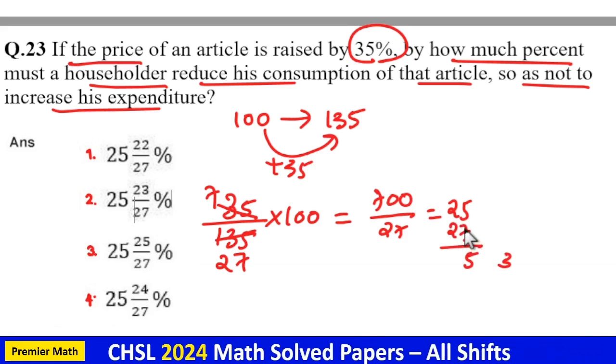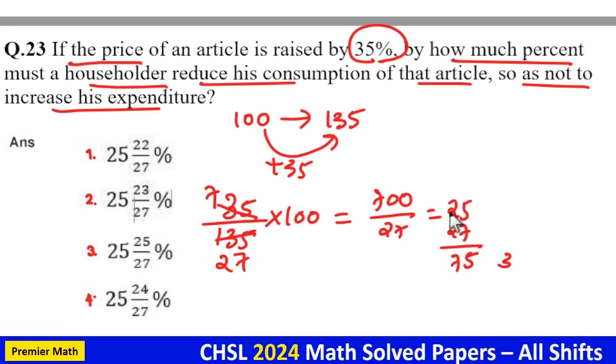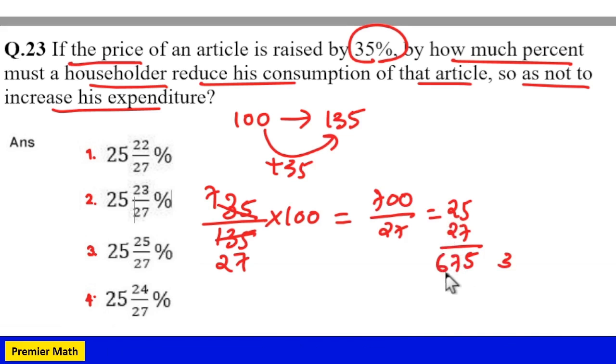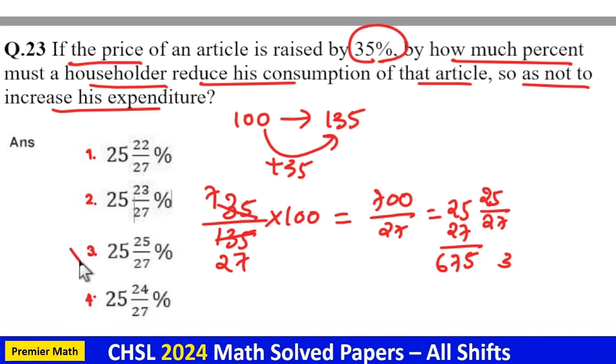3 remaining, 2 into 7, 14 plus 10, 24, 24 plus 3, 27, 2 into 2 plus 2, 6. So, 6 and a 5. 700 minus 675 is equal to 25. So, 25 into 25 out of 27. So, option 3 is your answer.